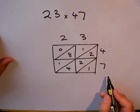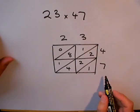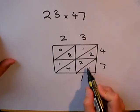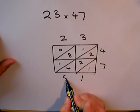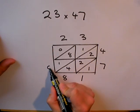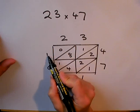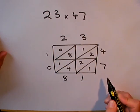Now I've completed my grid, I need to add up the diagonals. So, one, two, two and four make eight. One, eight and one make ten. And zero on its own means I've got the one to carry around the corner.